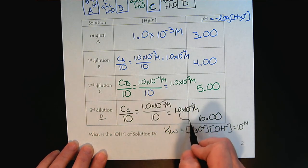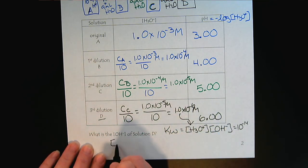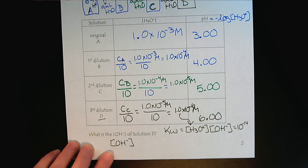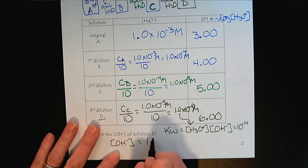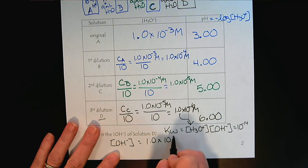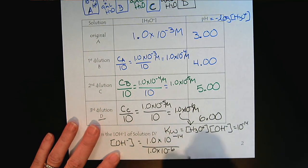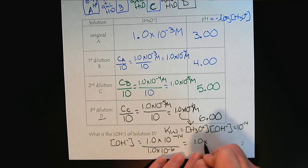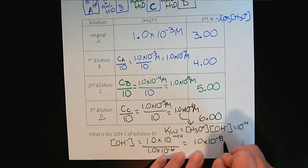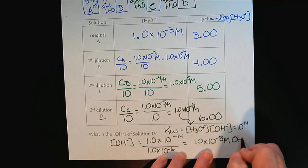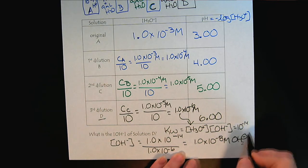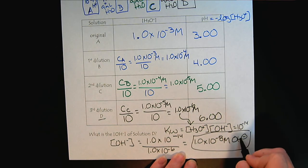And we know the hydronium concentration. It's right here. So we can solve for hydroxide. So the hydroxide concentration will be 1 times 10 to the minus 14 divided by 1.0 times 10 to the minus 6. And so our hydroxide concentration, 1.0 times 10 to the minus 8 molar hydroxide.